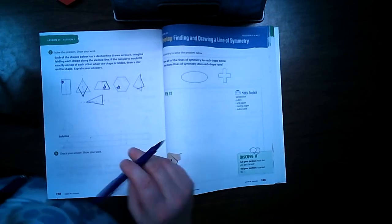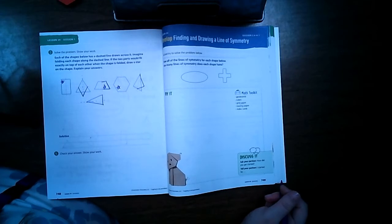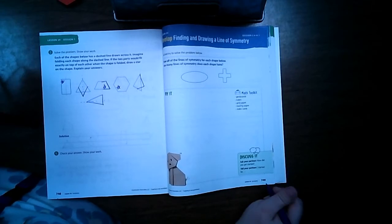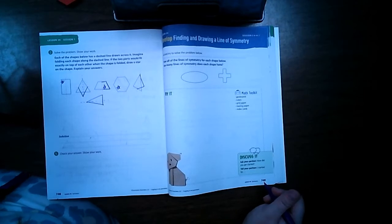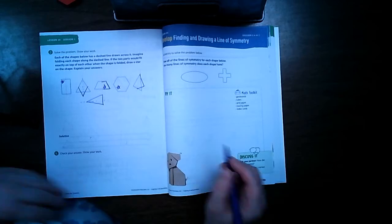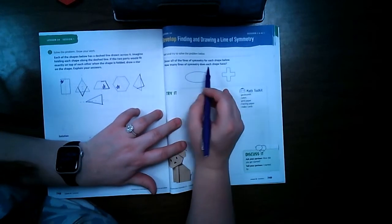Welcome back, this is Lesson 34, Session 2, our last lesson. We are on page 749 in our Volume 2 math book and we are finding and drawing a line of symmetry. Draw all of the lines of symmetry for each shape below.